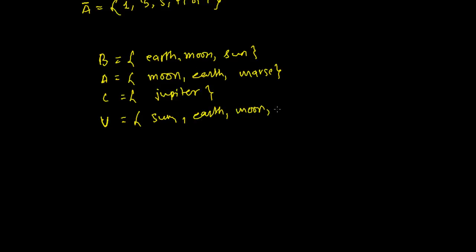Now for B complement, we can write B bar or B^C. So B complement here represents all the elements out of B, not including these things Earth, Moon and Sun.